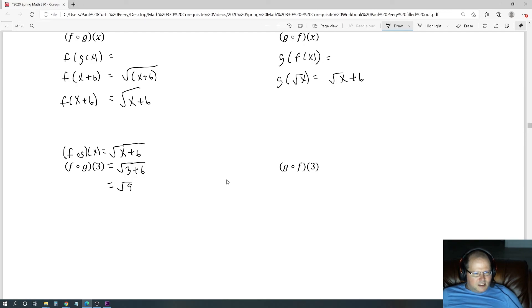3 + 6 is 9, and √9 is 3. Over here, we know the general form is √x + 6, which is √3 + 6, which does not simplify.